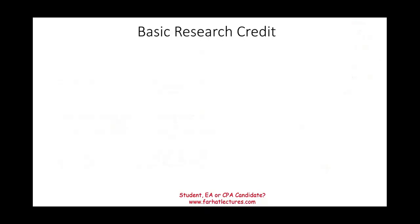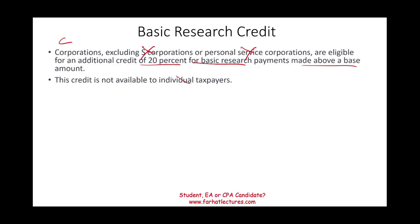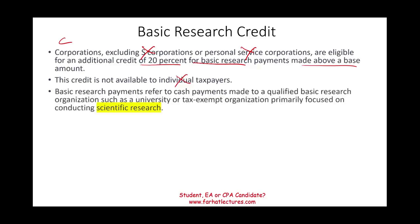The basic research credit is for corporations — not S corporations, not personal service companies. C corporations are eligible for an additional credit of 20% of basic research payments made above a base amount. This credit is not available to individuals. Basic research payments refer to cash payments made to qualifying research organizations, such as universities and tax-exempt organizations, where the primary focus is scientific research.